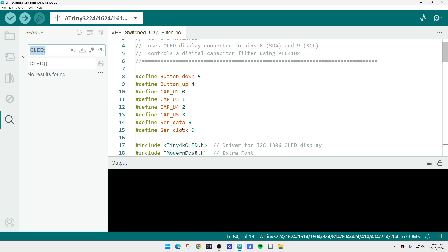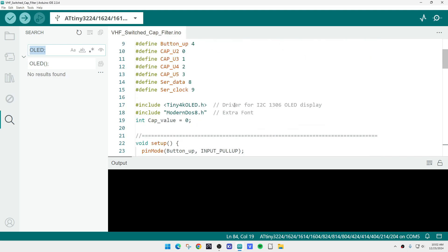These are the enable pins for those capacitors. Everybody shares a data line and everybody shares a clock line, but the enable pins are separate for the four devices. We're going to be using an OLED display.